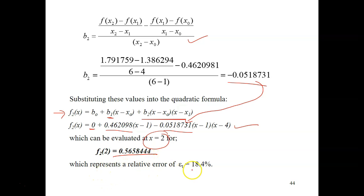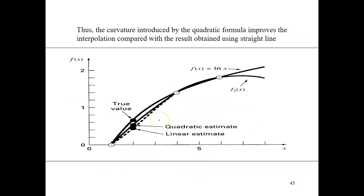Okay? Which represents an error of 18.4%. And of course, it's an improved estimation from your linear calculation just now. So, this is what we get then. The curvature introduced by the quadratic formula improves the interpolation compared with the result obtained using the straight line. This is the answer when we use linear estimate, and we use only 2 points. And this is the quadratic estimate if we use 3 points. 1, 2, 3 for our interpolation estimation. So, we get an improvement.